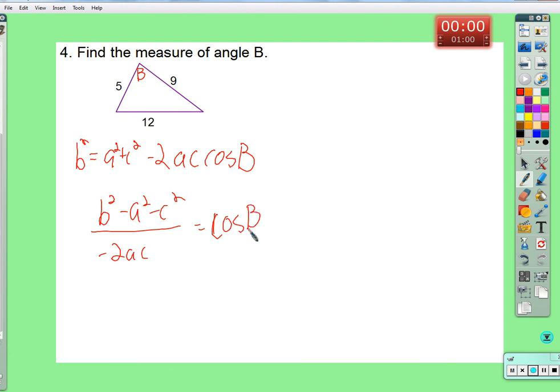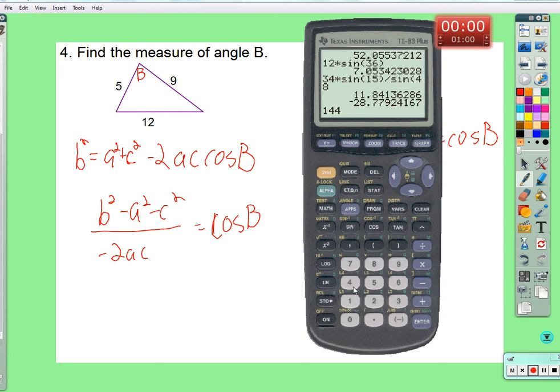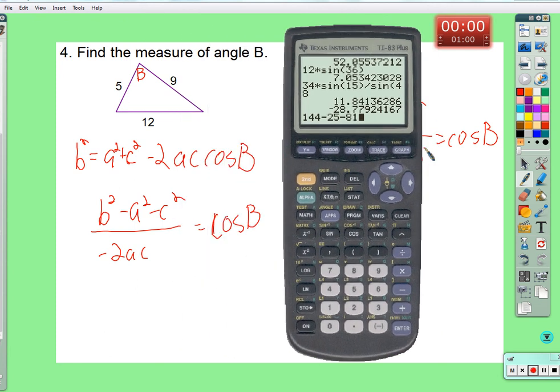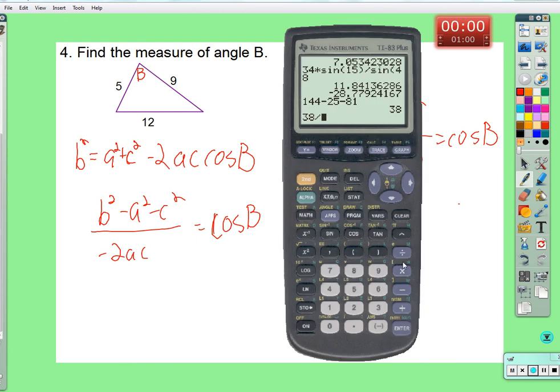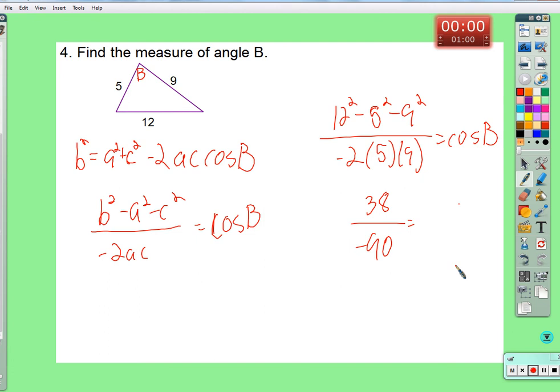12 squared minus 5 squared minus 9 squared over negative 2 times 5 times 9 cosine of B. 144 minus 25 minus 81. 38 over negative 90, which is negative 38 over negative 90. Negative 0.42222. That's the cosine of B.